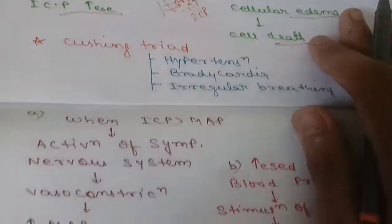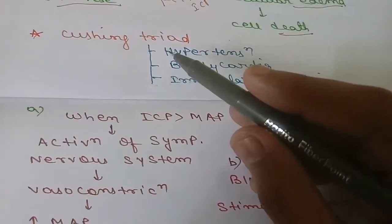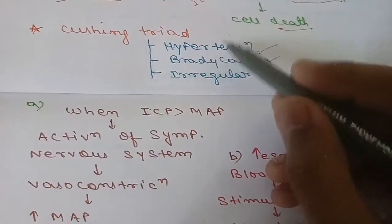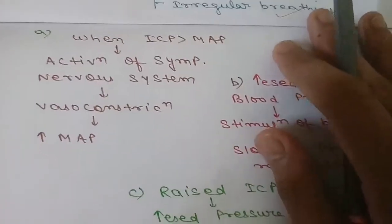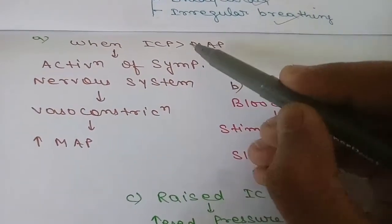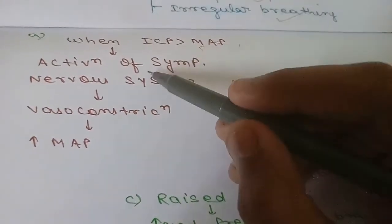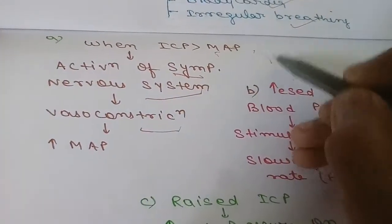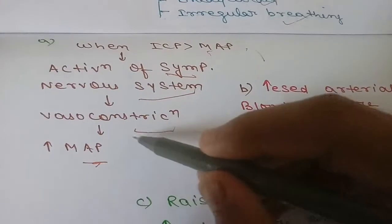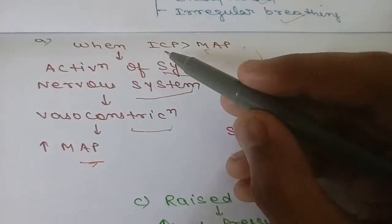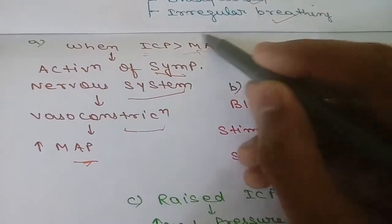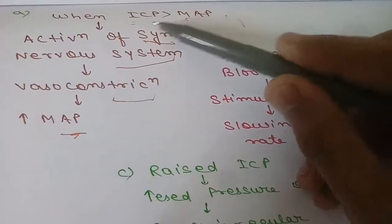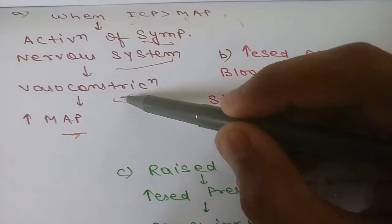In response to this swelling, the Cushing reflex occurs, involving three things: hypertension, bradycardia, and irregular breathing. When intracranial pressure becomes greater than mean arterial pressure, it leads to activation of the sympathetic nervous system, which causes vasoconstriction. This vasoconstriction increases mean arterial pressure in an attempt to restore normal blood flow to the brain.